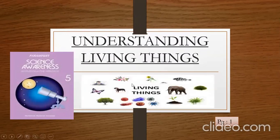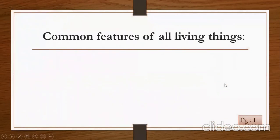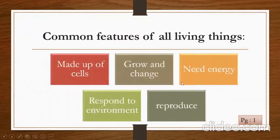What are living things? See in the picture — all the plants, all the animals, they all are the living things. Why do we call them living things? There are some features due to which we call anything a living thing. These features are: they should be made up of cells, they should grow and change, they need energy, they respond to environment, and they reproduce. There are five common features which are present in all living things.